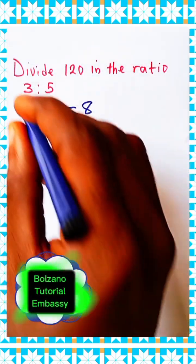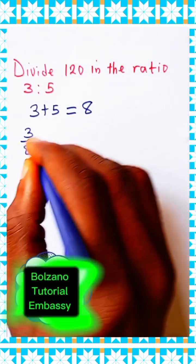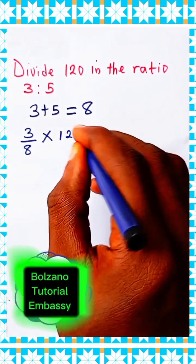Now the first value, which is 3, divided by this ratio sum 8, then multiplied by the number we are dividing, which is 120.